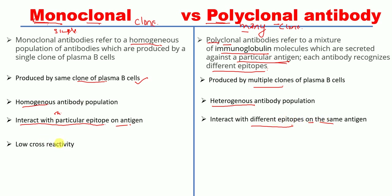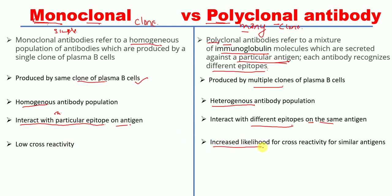Another difference is that monoclonal antibodies have low cross reactivity, whereas polyclonal antibodies have an increased likelihood of cross reacting with similar antigens.